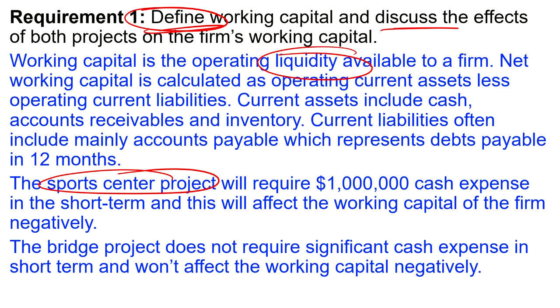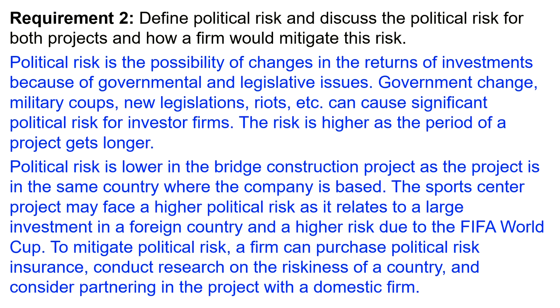In the model answer, they phrase it as a one million dollar cash expense, whereas the question said one million dollars of additional working capital. You would have noticed that and written: it requires a one million dollar working capital investment in the short term, which will impact the working capital of the firm negatively. That's the first requirement done.